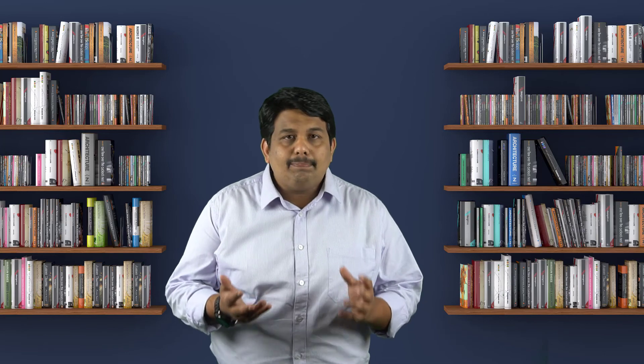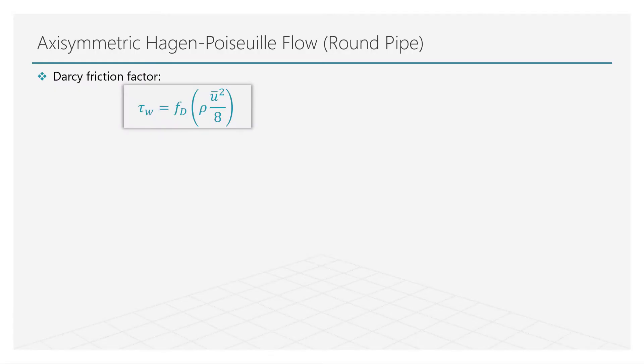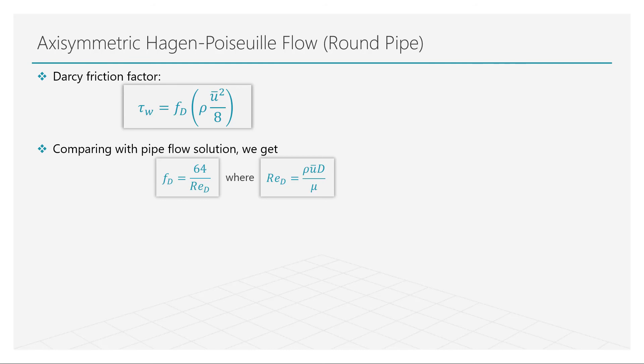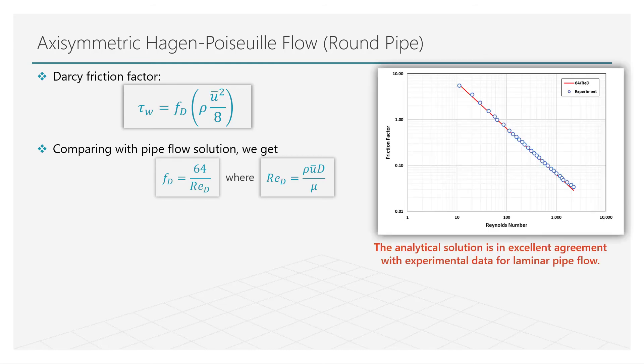Based on multiple experiments of fluid flow through a round pipe, an engineer named Henry Darcy developed a theoretical relationship between the shear stress and the mean velocity of the flow. He introduced a coefficient called the friction factor, which accounts for the frictional losses in the pipe. From our theoretical analysis, we have also derived an analytical expression for the shear stress for this flow field. By comparing these two equations, we can get an expression to mathematically evaluate the friction factor.